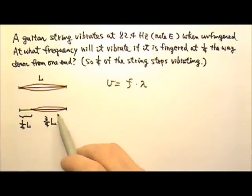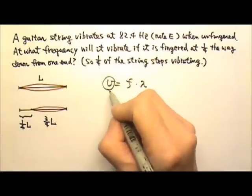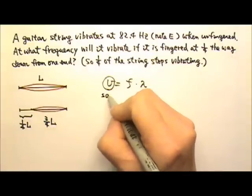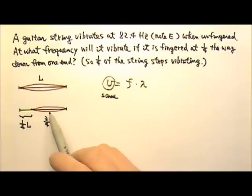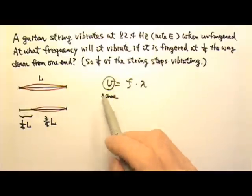Before and after the string is fingered, the speed on the string stays the same. Because it's the same string, same mass per unit length, under the same tension. So the speed stays the same.